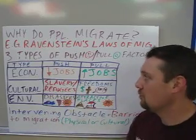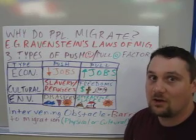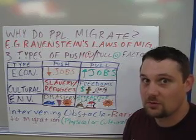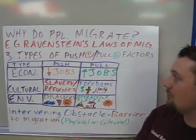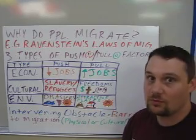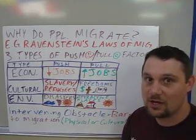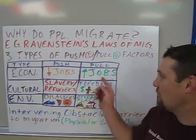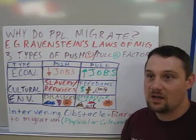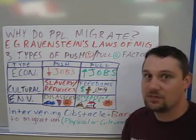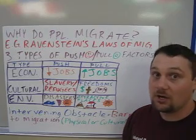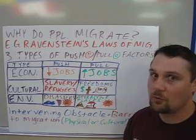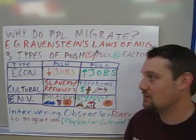The first type of push and pull factors are economic. Economics are the main reason why people move from one place to another — because they want to make more money or go to a place with better job opportunities. Economic push factors are bad jobs, a low number of jobs, or low-paying jobs — anywhere the job market is not good. A pull factor for economics is better jobs, more job opportunities, better-paying jobs, or better benefits like vacation or health benefits. That's probably the number one reason why people migrate today.